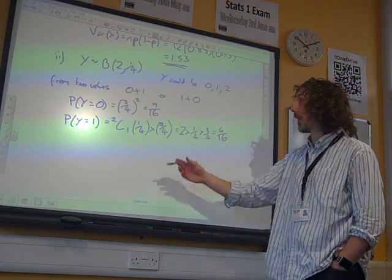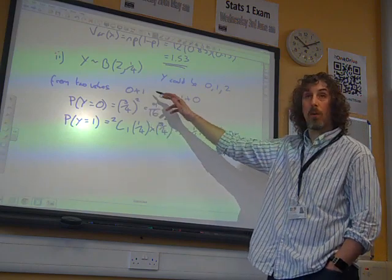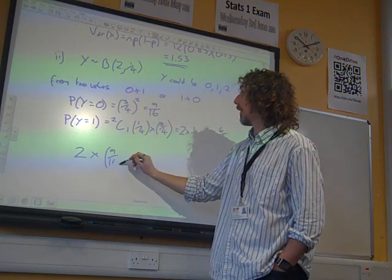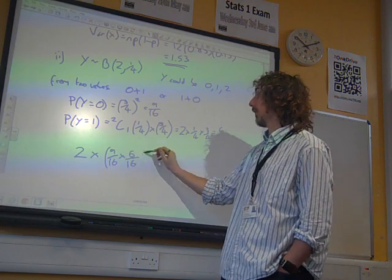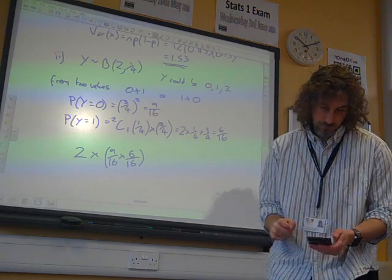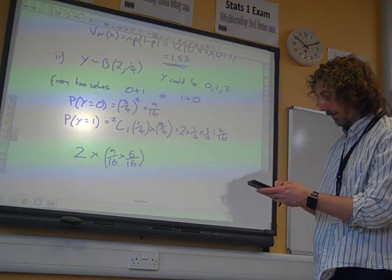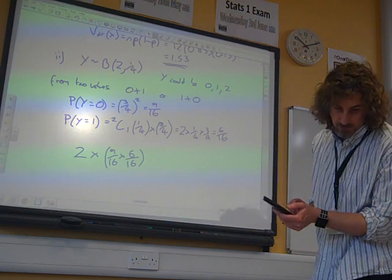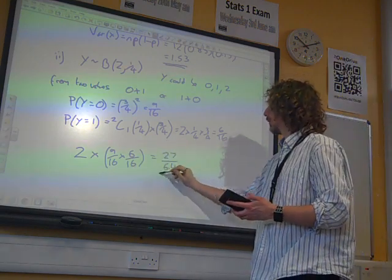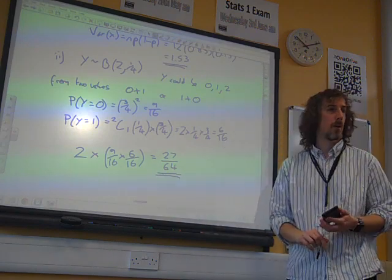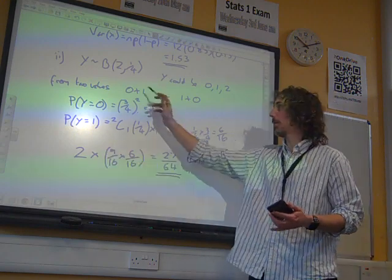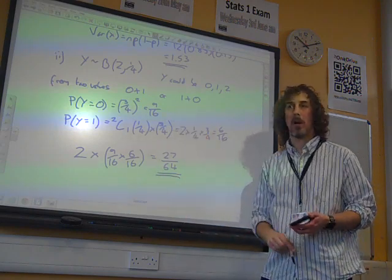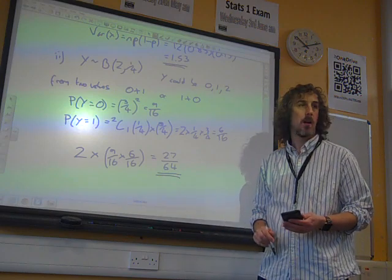And now we're doing 2 trials of this. So we either get 0 and 1 happening, or 1 and 0 happening. So the probability is 2 times 9 sixteenths times 6 sixteenths. Does that make sense? The 2, because it could be 0 and 1 or 1 and 0. And this is the probability that either of those happen for a 0 and a 1 occur. There it is. And that's maths.